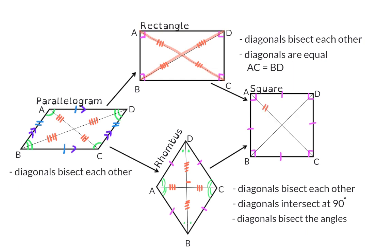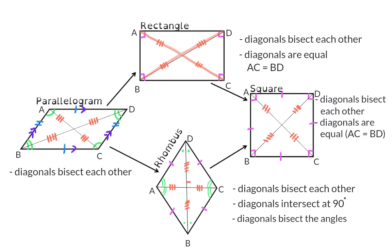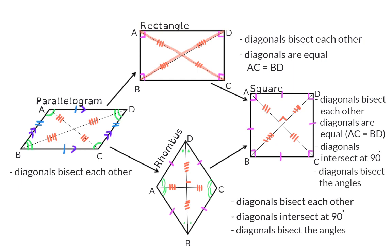For the square, all the previous properties are true. The diagonals bisect each other, they are equal in length, and just like the rhombus the diagonals intersect at 90 degrees. The diagonals also bisect the angles, and for the square we can go one step further and say that all the smaller angles are 45 degrees, because all the 90-degree angles are bisected.